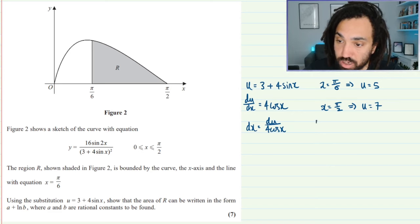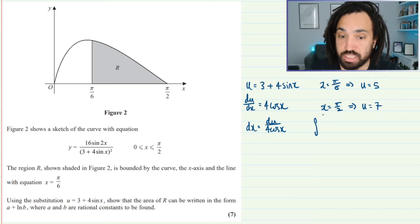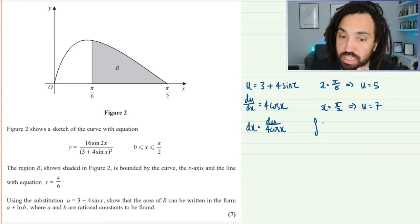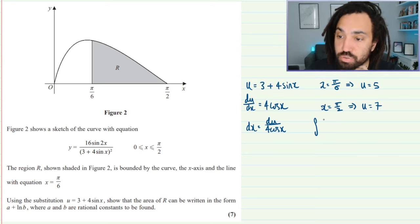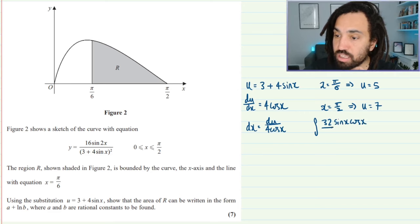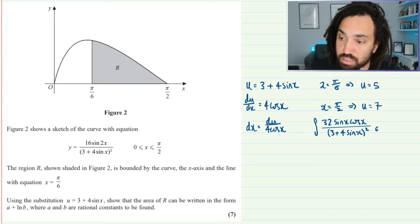Okay that's a good place to be. What I'm going to do now is I'm going to write out my integral. I'm going to do it in terms of x but I'm going to expand this top here because this is 16 sin 2x and I know that sin 2x is 2 sin x cos x so that will give me 32 sin x cos x and that will all be over this 3 plus 4 sin x all squared dx.